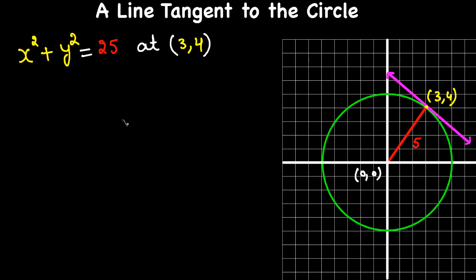In this video we will learn how to write the equation of a line that is tangent to a circle. For example, we have a circle here and this pink line is tangent to this circle at this point. They gave us the equation of this circle and the point where this line is tangent to the circle.